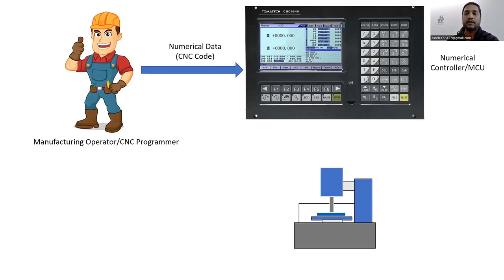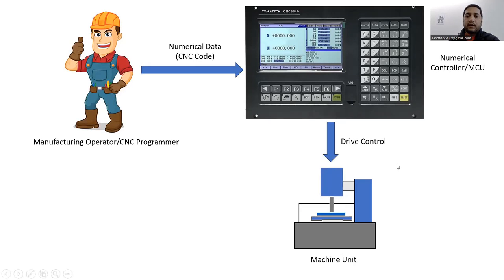The MCU, also called the controller, reads the instructions and sends electrical signals in the form of pulses to the motors, which then turn a screw to move the machining table. Sensors mounted on the table or motor send positioning information back to the computer. Once the computer determines the correct location has been reached, the next move is executed. This cycle repeats until the end of the instructions is reached.